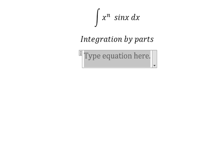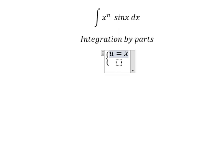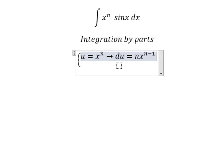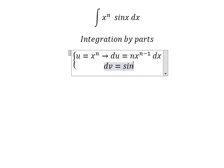I will put u equals to x to the power of n. So if we do first derivative, we will have n x to the power of n minus 1 dx. dv, that is sine x dx. The integration of this one...